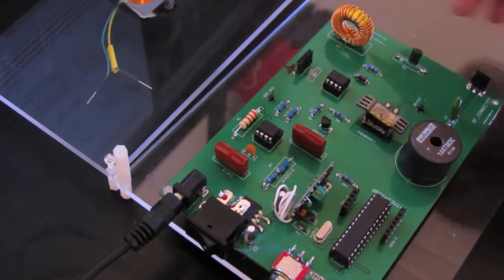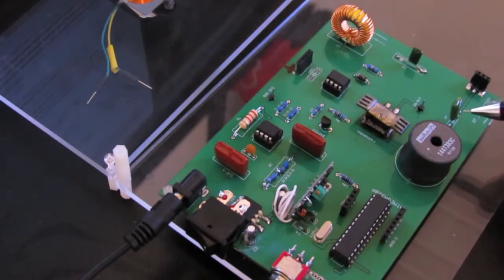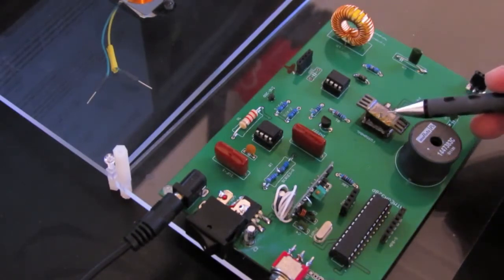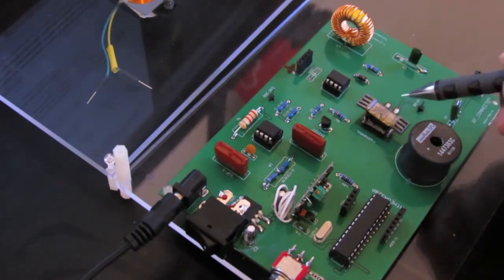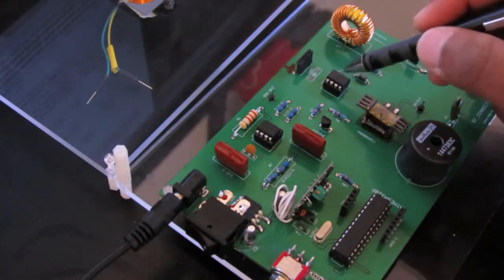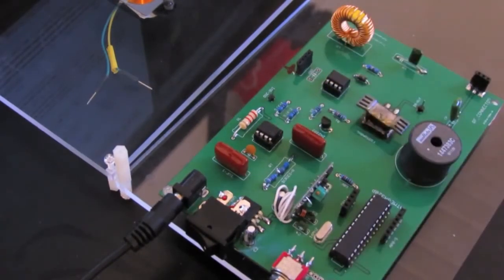Here we have the Class E amplifier. Here is the tuning capacitor which is part of the resonant circuit. Here is the MOSFET. The MOSFET is being driven by the MOSFET driver which gets the signal from the voltage-controlled oscillator.